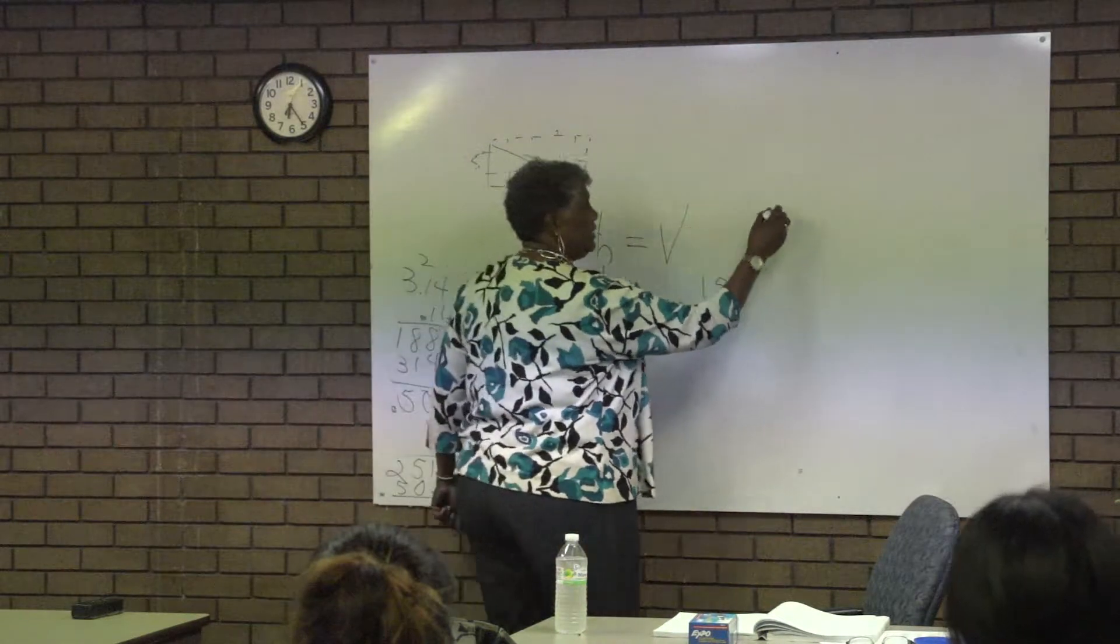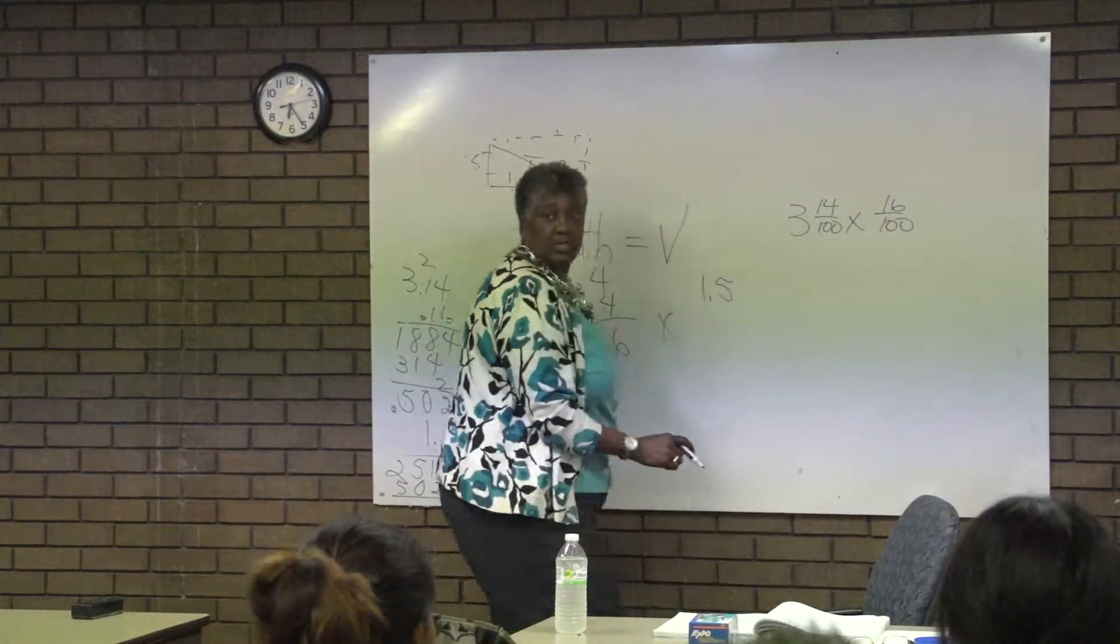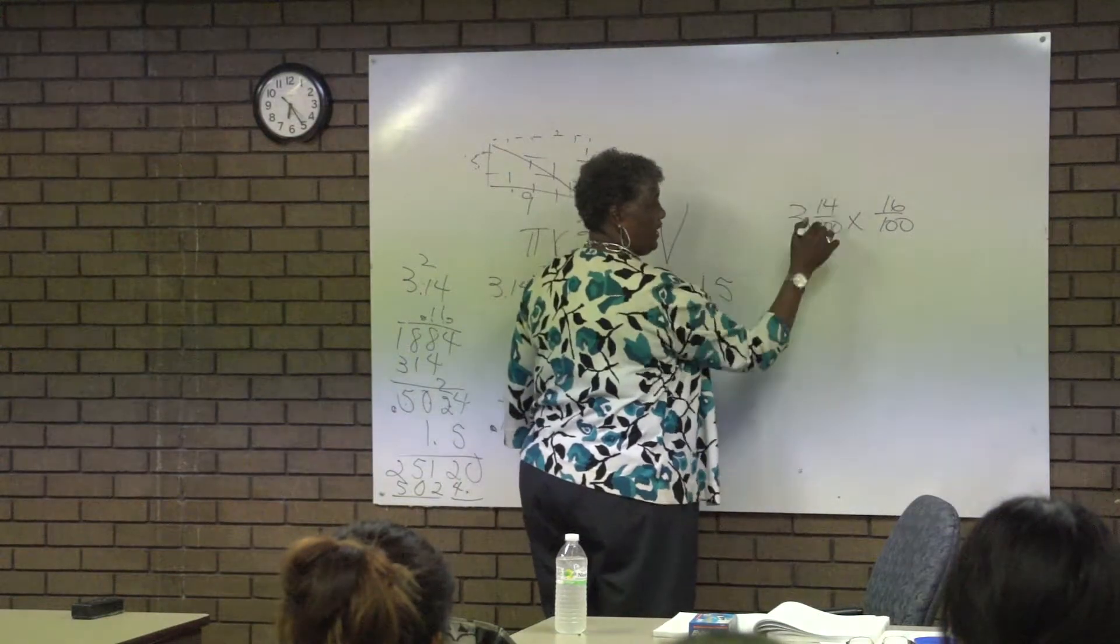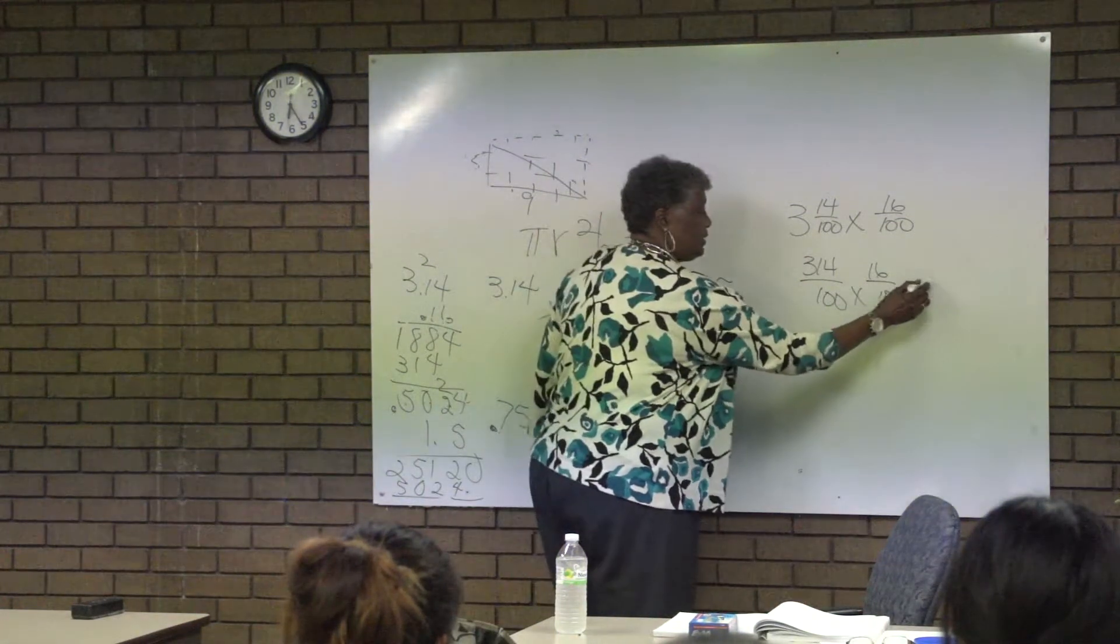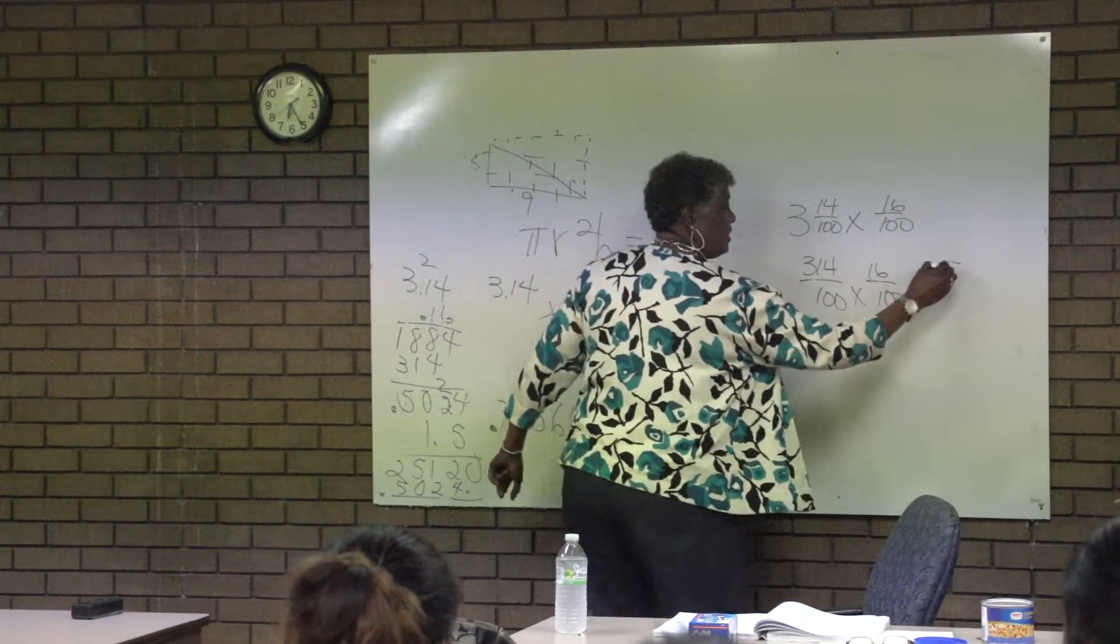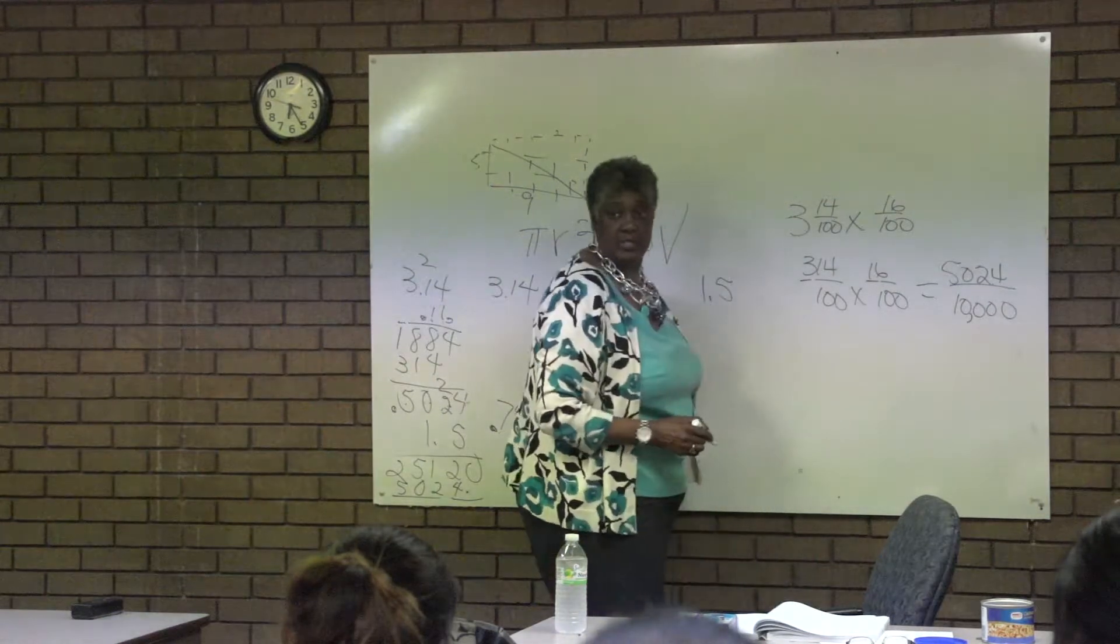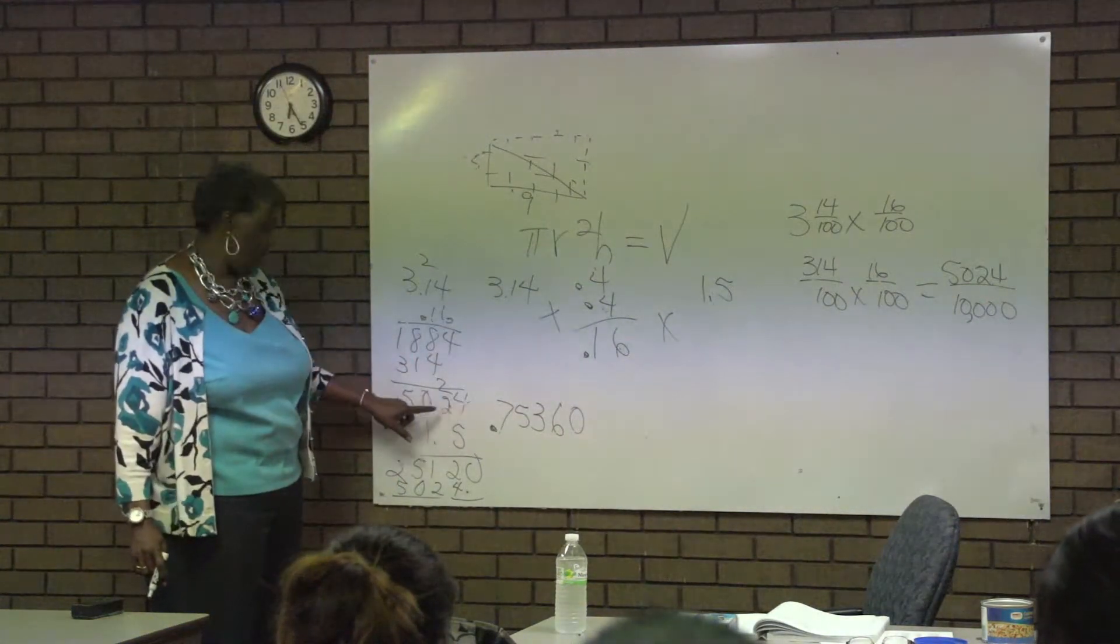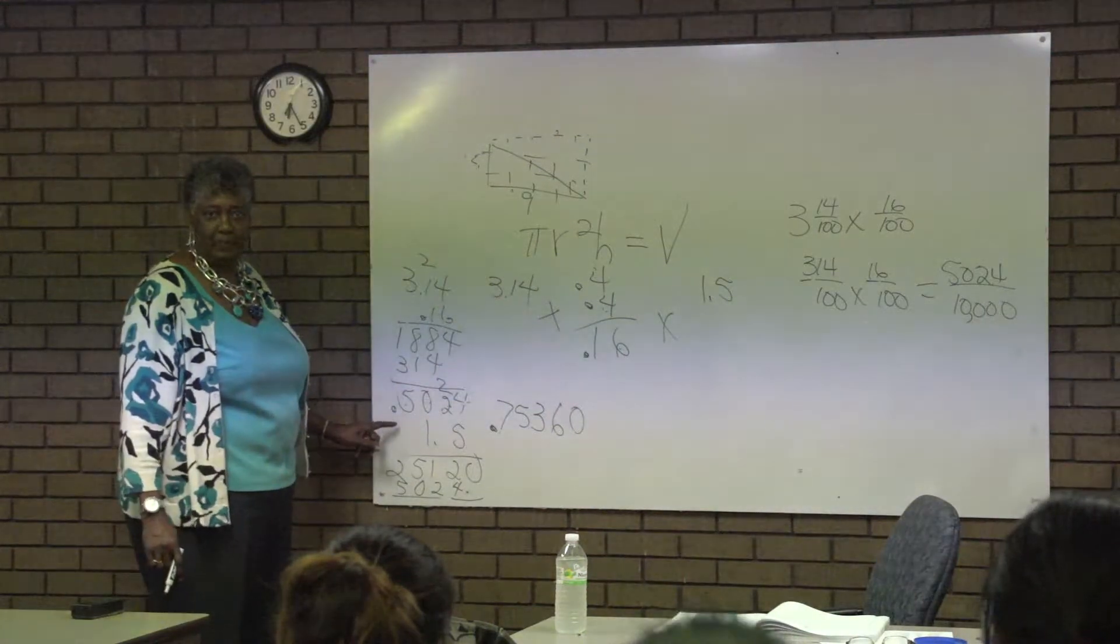In other words, if I broke this into the fraction that it is, that says three and fourteen hundredths times sixteen hundredths. That's what this says as a fraction. I'd have to change this to an improper fraction. That would be three hundred and fourteen hundredths times sixteen hundredths. Then I'd have to multiply three fourteen times sixteen, which is what I did to get five, zero, two, four. Then I'd have to multiply a hundred times a hundred, and I'd get ten thousandths. Five thousand twenty-four ten thousandths. That's what this says. It's just easier to do it by counting than by changing them into fractions and doing all of that. But it says the same thing.